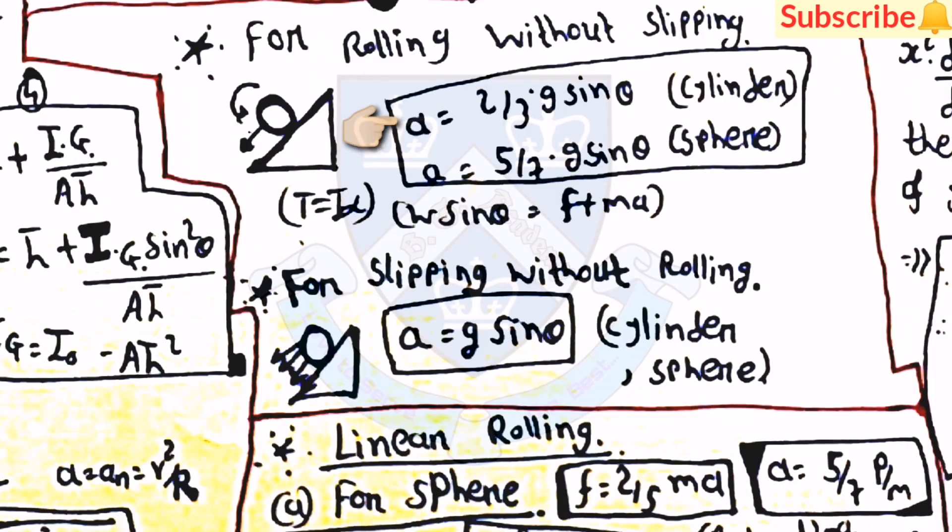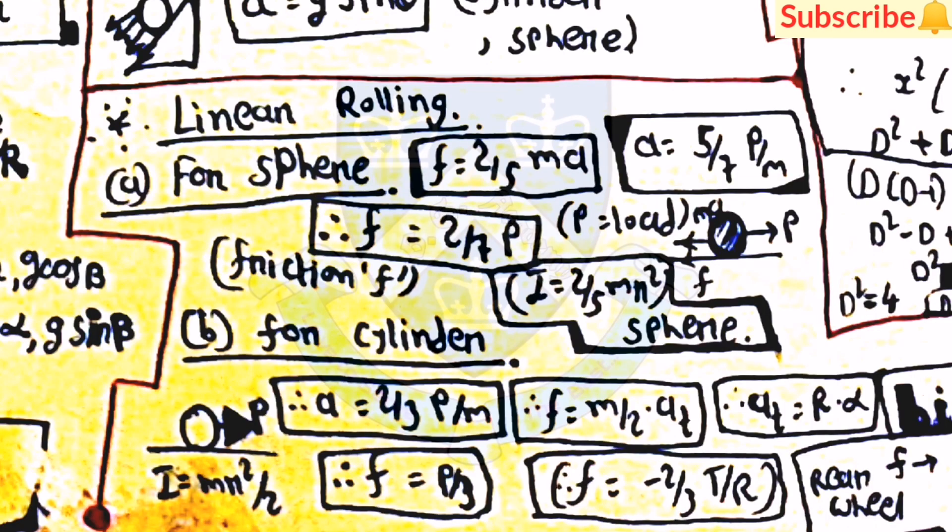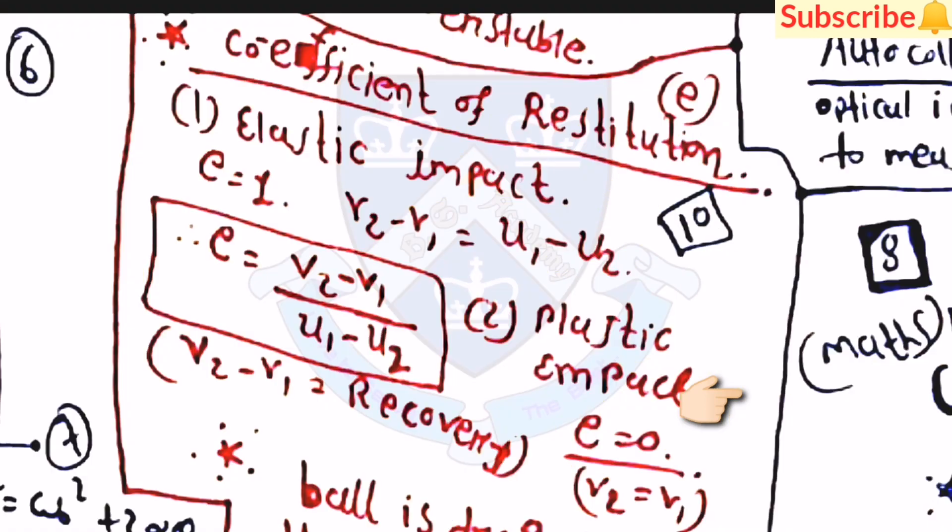Then after, for rolling without slipping, a is equal to 2 by 3 into g sin theta for cylinder, and a is equal to 5 by 7 into g sin theta for sphere. Then for slipping without rolling, a is equal to g sin theta, which is same for cylinder and sphere. Then after, for linear rolling, here first equation for the sphere: f is equal to 2 by 5 into ma, and a is equal to 5 by 7 into P by m. Then f is equal to 2 by 7 into P. Then for cylinder, a is equal to 2 by 3 into P by m. Then f is equal to P by 3, and f is equal to m by 2 into a_t. Here a_t is equal to r alpha.